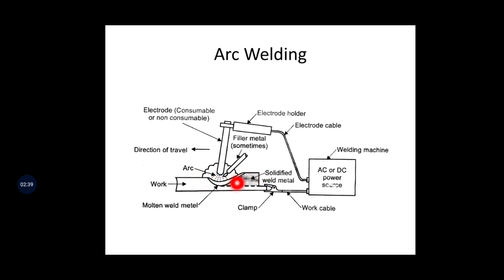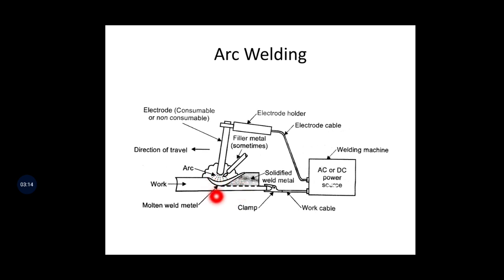Arc welding is a joining process where two metals are joined by means of an electric arc struck between two electrodes — one is the consumable or non-consumable electrode and the other polarity is the workpiece. Because of electricity you get an arc that has high intensity of temperature, which melts and vaporizes the metal. After solidification you get a strong joint. That is the concept behind arc welding.